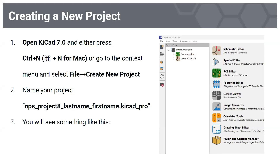Now we're going to open up KiCAD 7.0 and then either press Ctrl+N or Command+N if you're using a Mac. Then go to the context menu and select File > Create New Project. Name your project as listed, and after you're done with that, you'll see something that looks like this.